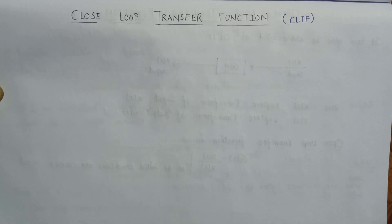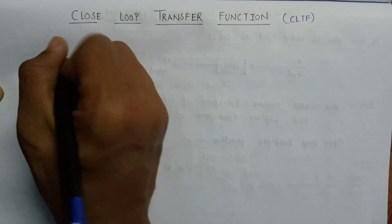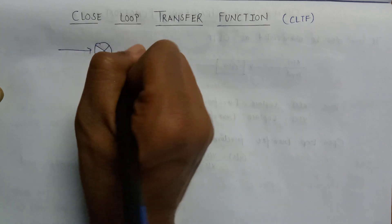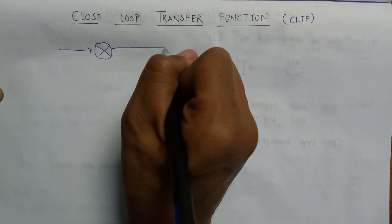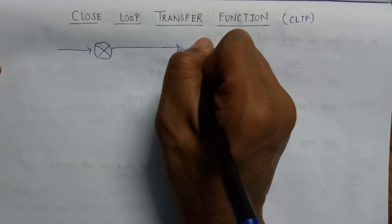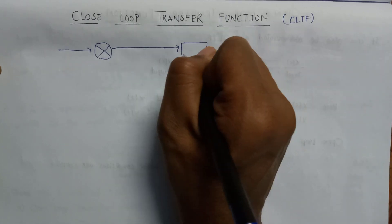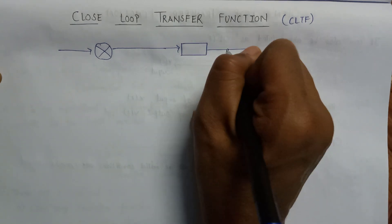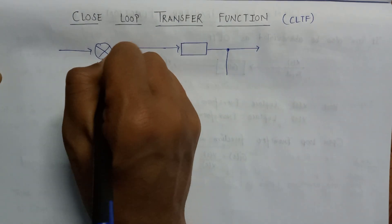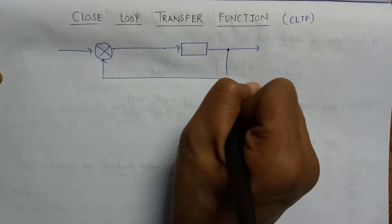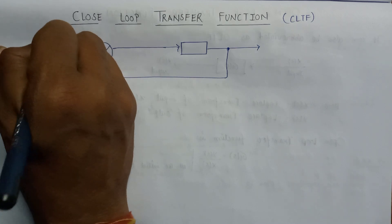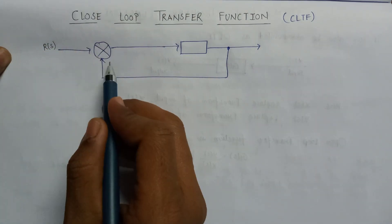Now let us consider a block diagram for better understanding of closed loop transfer function. This is the input R which is applied to the system.